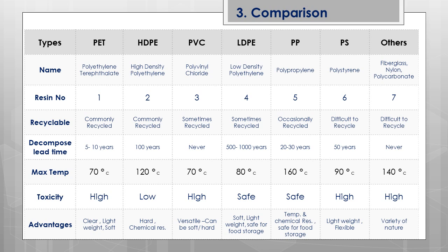Regarding maximum temperature holding: PET is 70°C, HDPE is 120°C, PVC is 70°C — PET and PVC are soft materials so they are easily meltable. LDPE is 80°C and PP has the highest melting temperature in this category. PS is 90°C, and some plastics under category seven exceed PP's melting point. On toxicity: HDPE is low toxicity; LDPE and PP are widely used in food products and are safe for food and beverage usage. The remaining plastics are highly toxic, so end users should check for numbers 2, 4, or 5 for safe food storage applications.